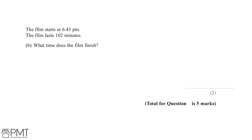The film starts at 6.45pm. The film lasts 102 minutes. What time does the film finish? The first thing we'll need to know for this question is that 60 minutes is equal to 1 hour. If this is the case, then 102 minutes is equal to 1 hour 42 minutes, and this will be useful when working out the time the film finishes.